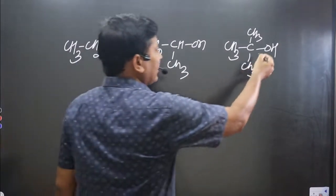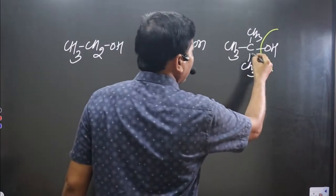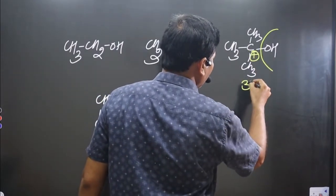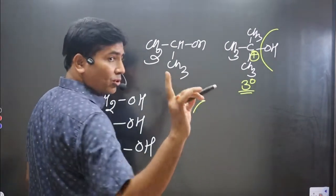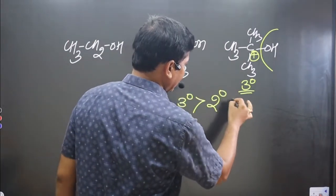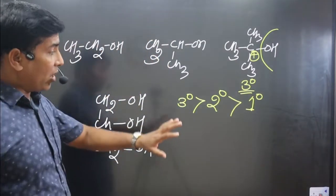Why? Because tertiary alcohol can easily remove OH group, forming stable carbocation. What kind of carbocation? Tertiary carbocation. That's why tertiary alcohol is more basic than secondary alcohol, and secondary is more basic than primary alcohol.